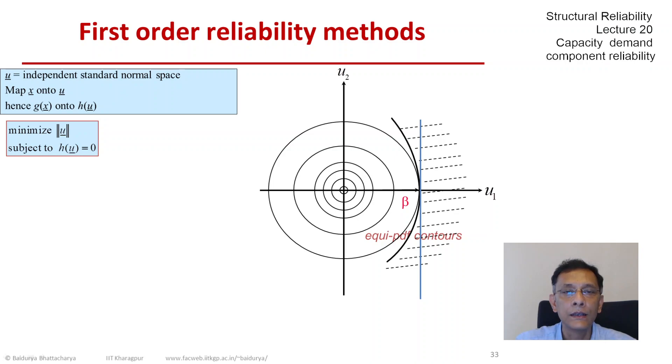Because of this rotational symmetry of the standard normal space, the failure probability simply becomes the evaluation of a one dimensional normal probability, provided we can find that minimum distance point and the minimum distance.